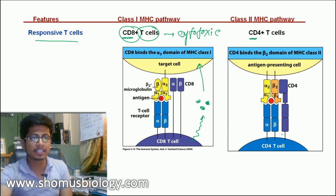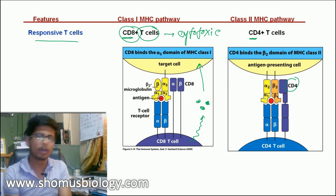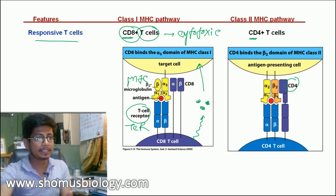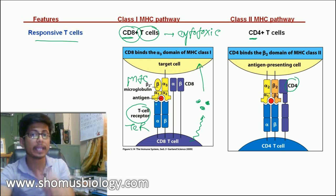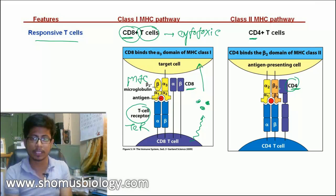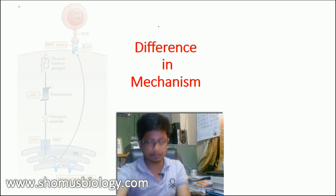MHC class 2 is recognized by T cells with the help of the CD4 receptor. The interaction between a T cell and an antigen presenting cell is primarily brought about by the MHC and the T cell receptor, or TCR. This interaction is confirmed and identified by either CD8 or CD4. If identified by CD8, it provides the killing signal. If identified by CD4, it provides a signal to activate the rest of the immune system cells and B cells.